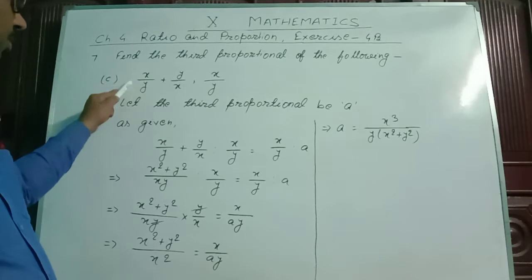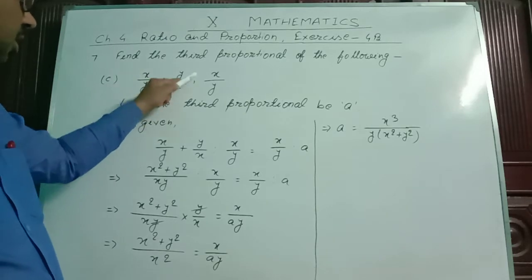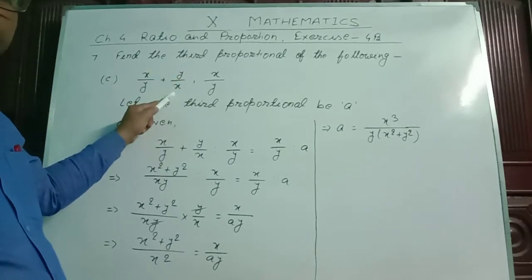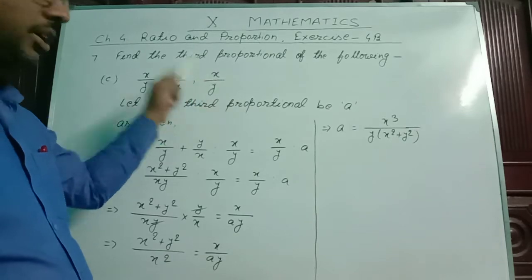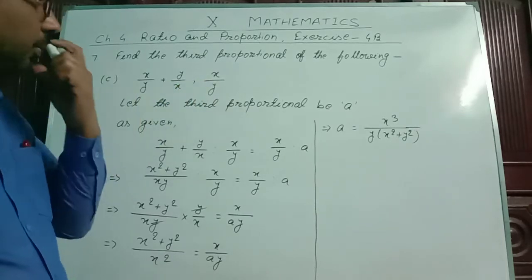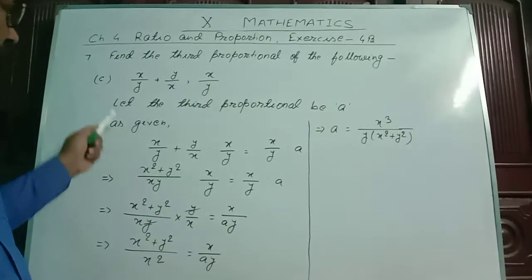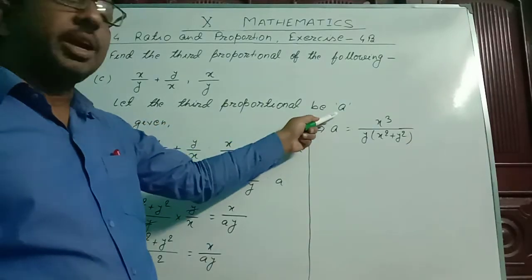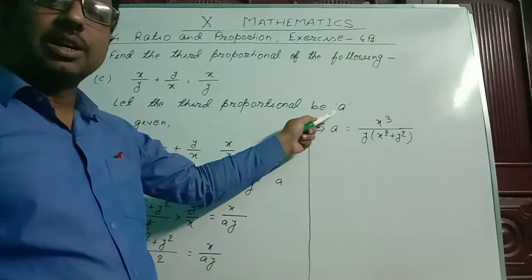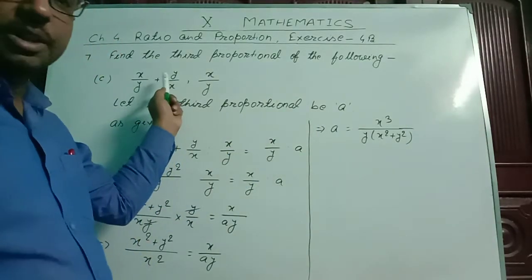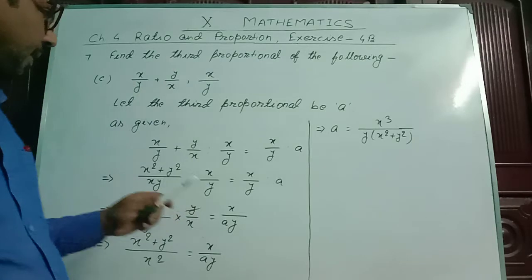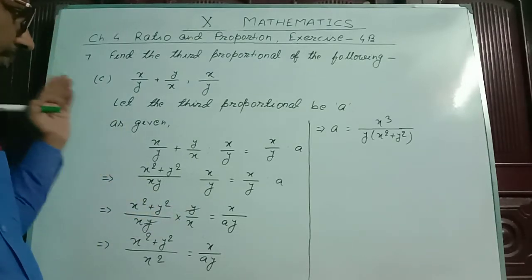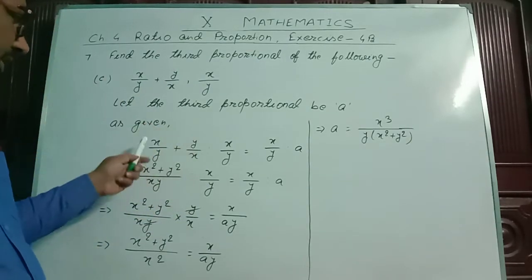In question number 7c, these two quantities are x/y + y/x — this is the first quantity — and the second quantity is x/y. We are asked to find out the third proportional. For that, let the third proportional be 'a'. Here we can't consider x because x is already given in the question. We will prepare the order of this proportion.